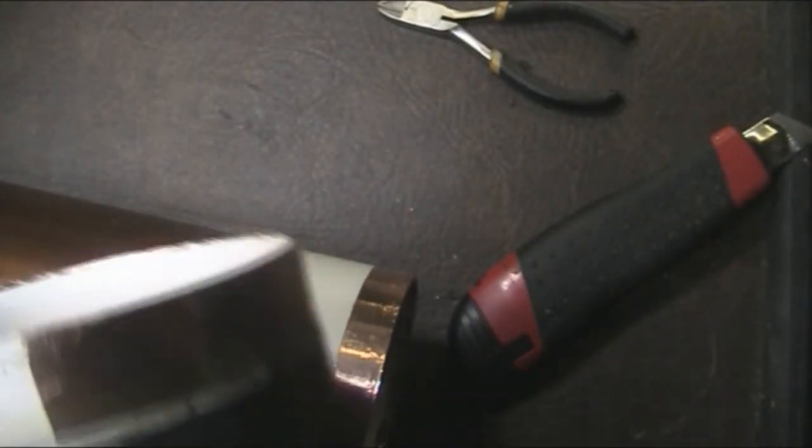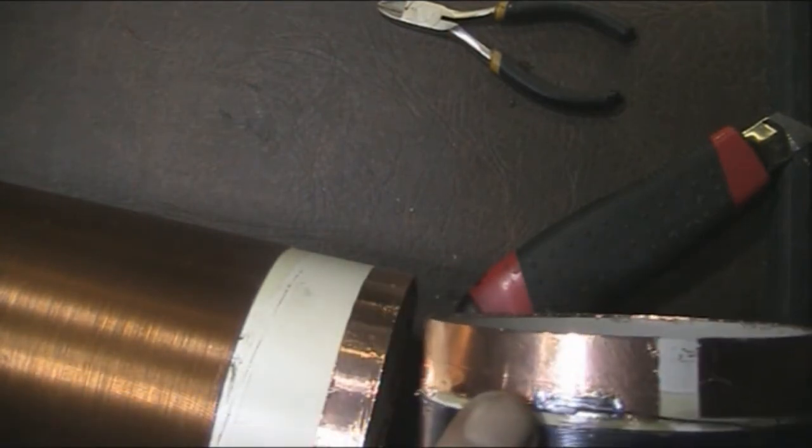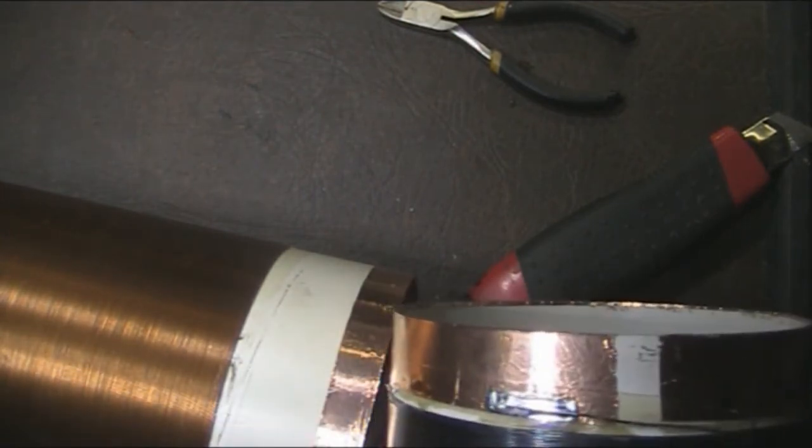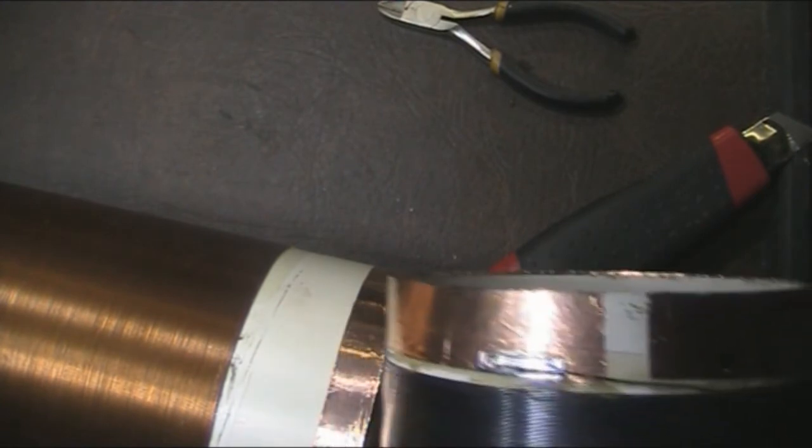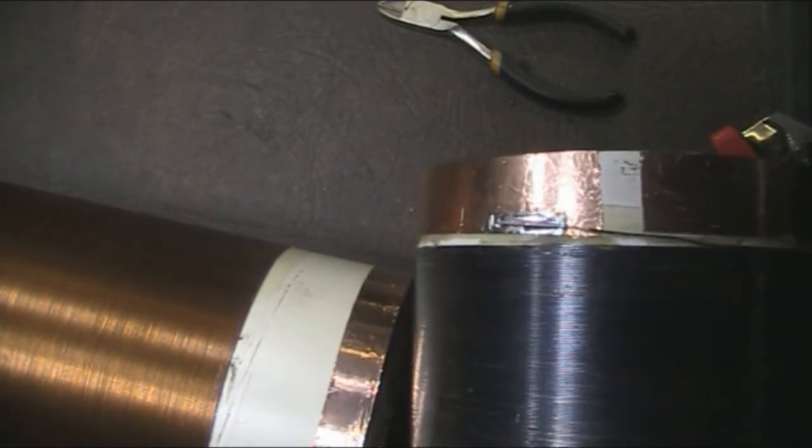And then the top is just, the bottom of the coil is just straight onto the copper wire, again leaving the gap to stop the shorted turn.